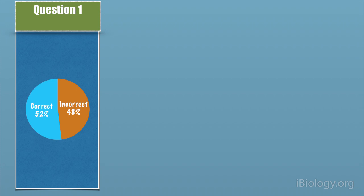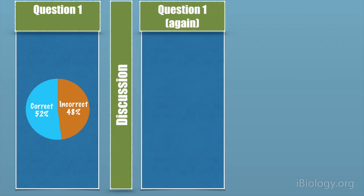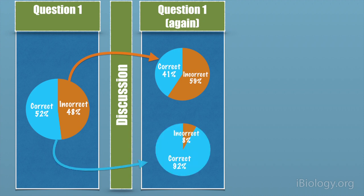Here's a picture of the data and you can see that about 48% of students missed the question on the first go-round. When the question was re-asked after discussion, you can see that 41% of students got it right now and 59% still got it wrong.